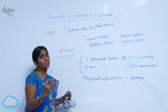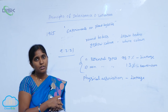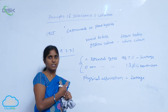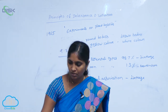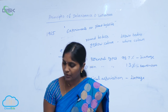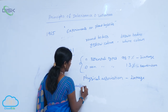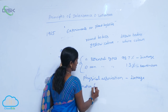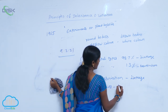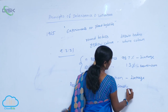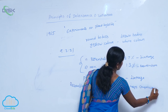High rate of linkage means low rate of recombinations, and high recombinations mean low rate of linkage. This clearly demonstrates the linkage and recombination relationship. By using recombination frequencies, genetic maps are constructed.